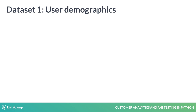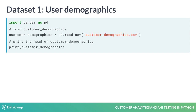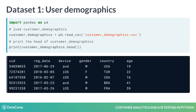We have two datasets related to our app. First is a set of user demographics tied to a unique user ID number. Let's import this file, customer-demographics.csv, with the pandas read_csv method. As we can see, it includes a broad set of demographic information.